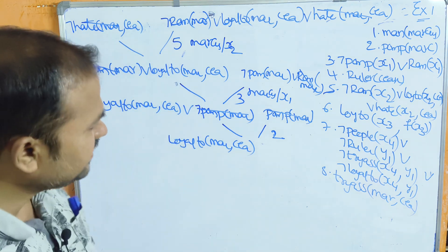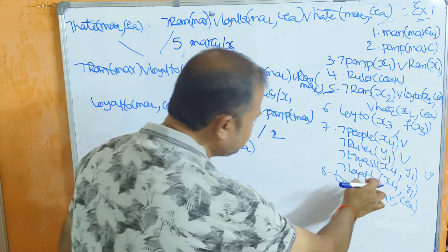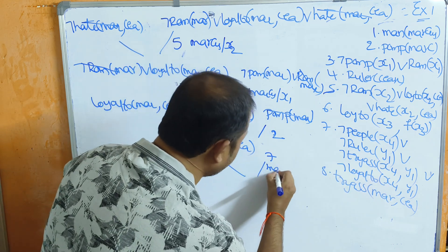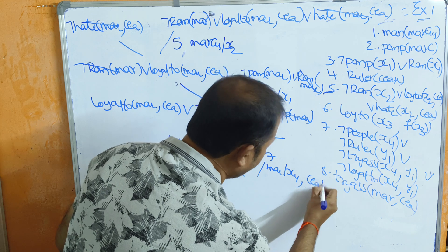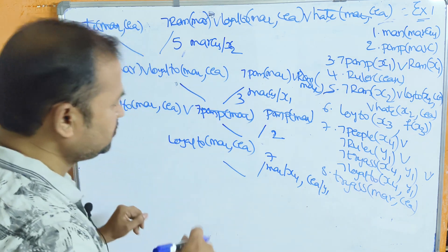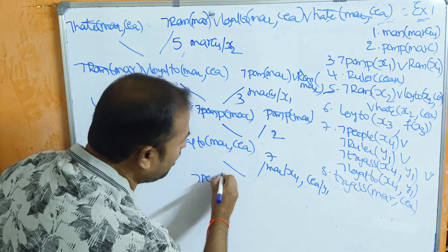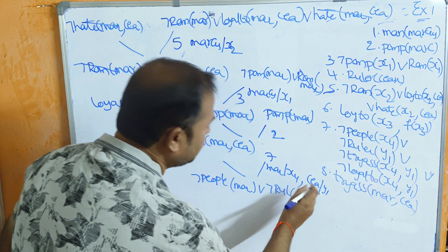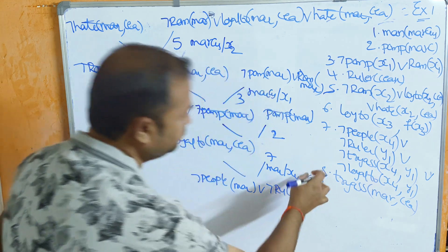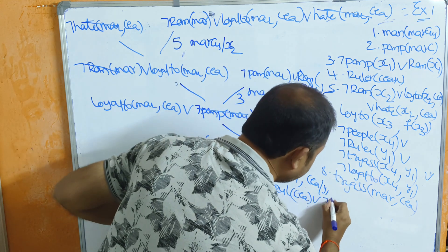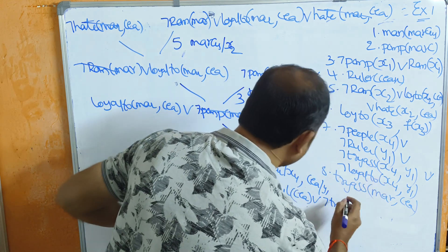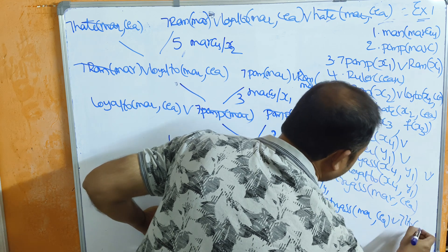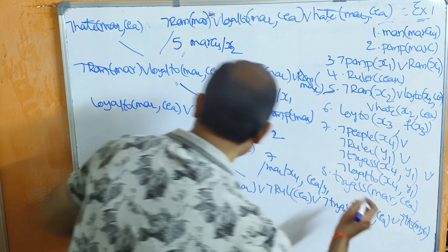Now we need a parent clause containing negation loyal_to. The seventh clause has negation loyal_to. Substituting marcus/x4 and caesar/y1 into the seventh clause gives: negation people(marcus) or negation ruler(caesar) or negation try_assassinate(marcus, caesar) or negation loyal_to(marcus, caesar). Cancelling loyal_to(marcus, caesar) with negation loyal_to(marcus, caesar), we now process the remaining literals.